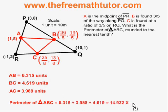But because there is a scale of one unit equals 10 meters in this drawing, I have to multiply by the scale. My result is that the perimeter of triangle ABC is 149.2 meters, rounded to the nearest tenth.